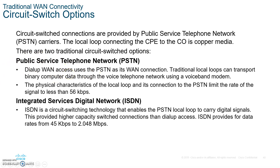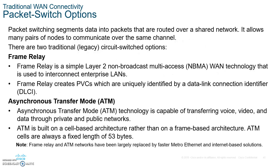With ISDN, you got 64 kilobits per line. There was the Basic Rate Interface (BRI) channel and the Primary Rate Interface (PRI). Frame relay was also available but very slow and is essentially gone now, though it may still be used in some developing countries.